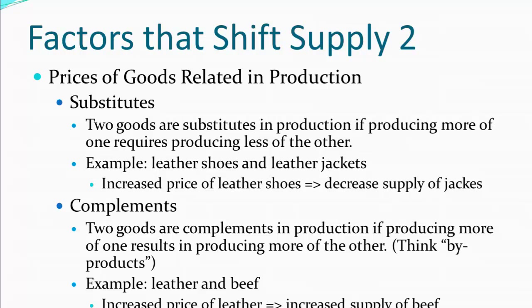In this case, if we have an increase in the price of leather, we'd actually have an increase in the supply of beef. Reasoning through it: if there's an increase in the price of leather, it makes sense for us to slaughter more cattle. But if we slaughter more cattle, we end up with more beef as a result, even if the price of beef didn't change. So we have an increase in the supply of beef.